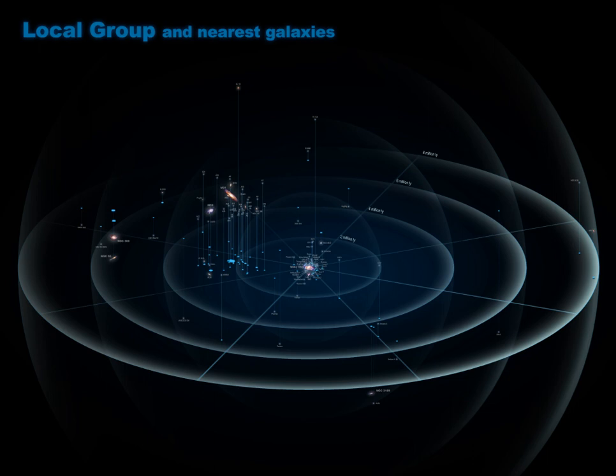The supergalactic coordinate system is the coordinate system taking the local sheet, the supergalactic plane, as its x-y basis.